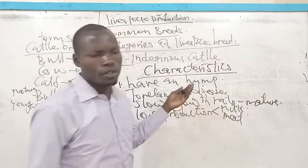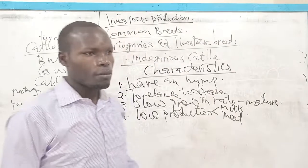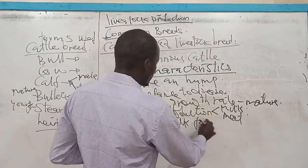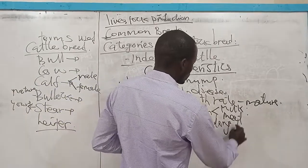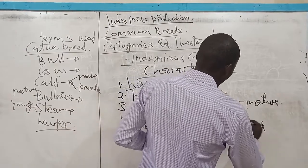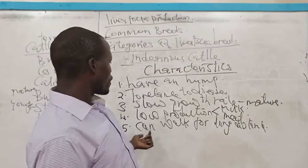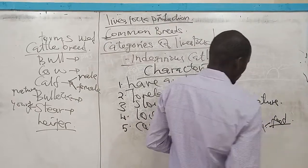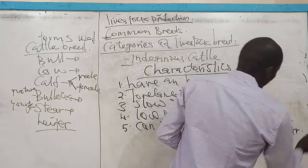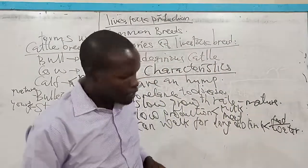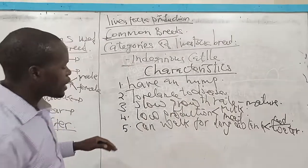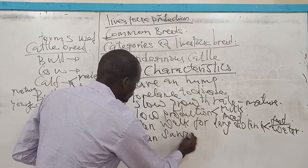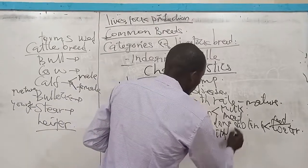That means these cattle produce a very little amount of milk. Next, they can walk for long distances. They can walk for long distances in search of feed and water. Also, they can survive with little food — the little amount of feed which is available, these cattle are able to survive on it.